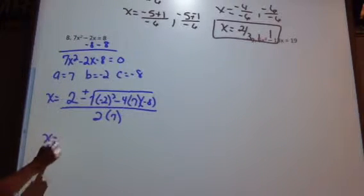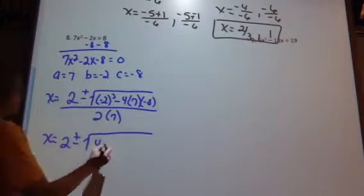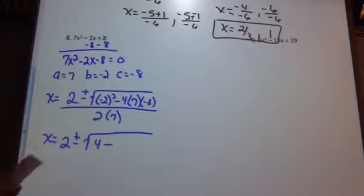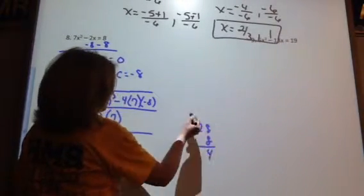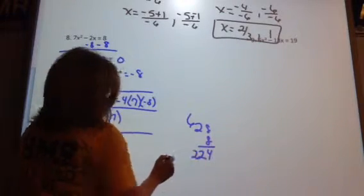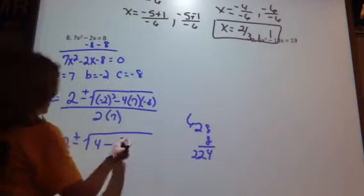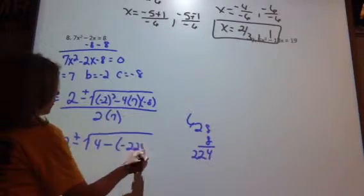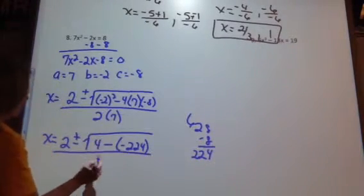Now let's simplify. Negative 2 times negative 2 is 4, minus 4 times 7, which is 28. And then 28 times negative 8, which I don't have here. Let's see what that is. So that's going to give me negative 224, because that 8 is negative, all over 14.